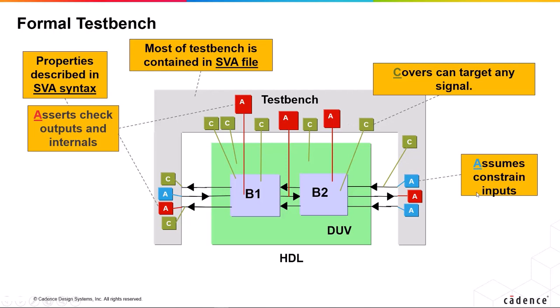Assumptions constrain the input. They restrict the behavior of the inputs because if you don't have any assumptions, a formal tool conceptually will apply any value to any signal input at any time. So basically the inputs can be viewed as random, but very few designs are expected to work with completely random inputs. That's why you need these assumptions.